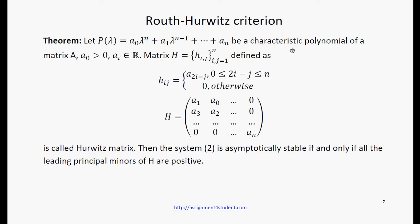Let P be characteristic polynomial of matrix A. We define Hurwitz matrix H using the coefficients of characteristic polynomial according to these formulas. Then the system 2 is asymptotically stable if and only if all the leading principal minors of H are positive.